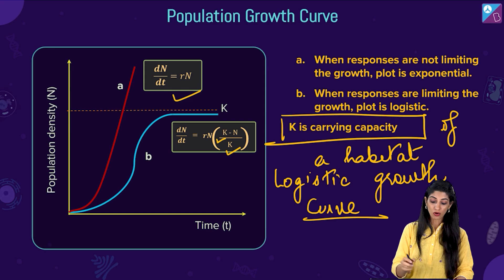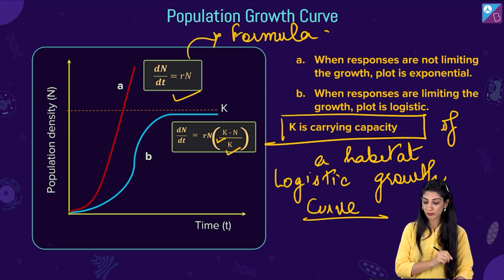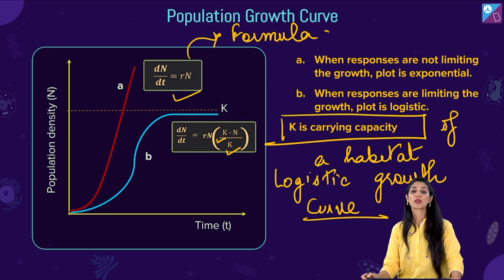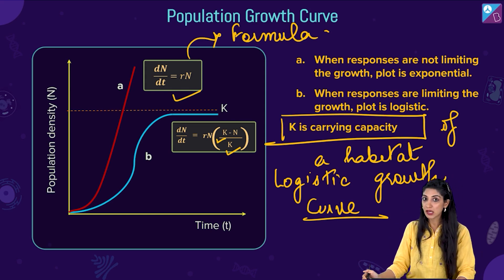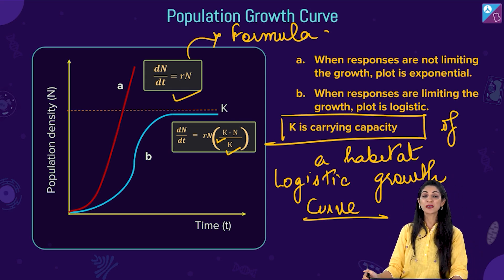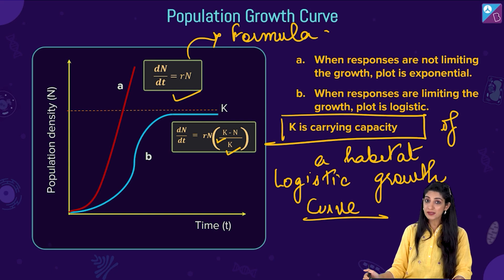In the logistic growth equation, everything is the same as exponential but we include the carrying capacity: dN/dt = rN × (K−N)/K. Questions may ask you to identify the shape of the curve — logistic or exponential — or to identify the correct formula. Make sure you can label the formula and understand it.